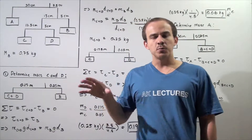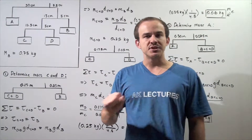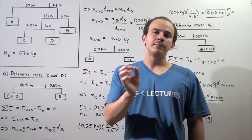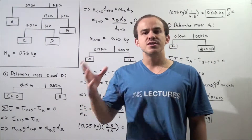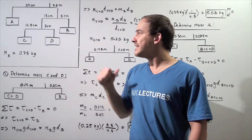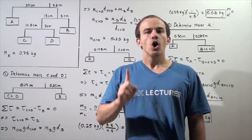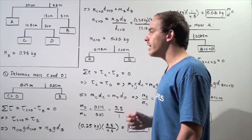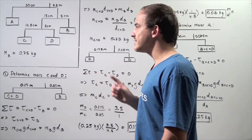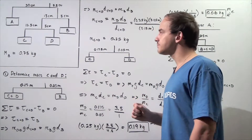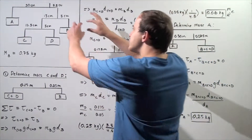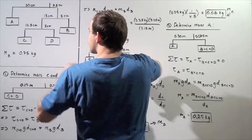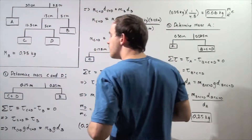We break the problem down into two steps. In part one, we calculate the mass of object C and object D, and then using that information and the given data, we calculate the mass of object A. Let's begin with step one: determine the mass of object C and object D. In this step, we're essentially examining beam two and beam three. Let's begin with beam two.